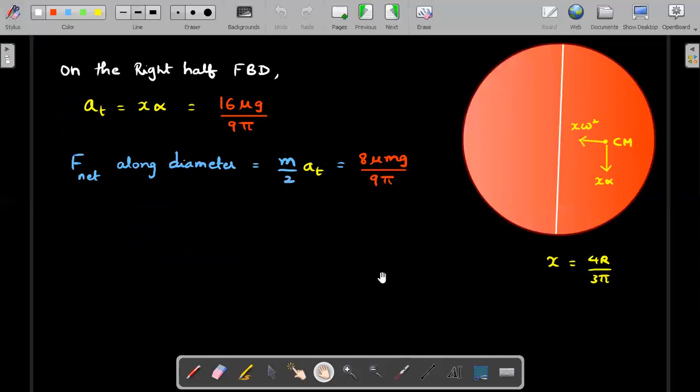Option C was about the net force acting along the diameter of a half—let's say the right half. We already saw the value of alpha is 4μg/3R. If I draw only the right half FBD, net force is always related to mass into acceleration of center of mass. The center of mass itself is going in a non-uniform circular motion of radius x, where for a disk x value is 4R/3π. The centripetal acceleration would be x omega square, and tangential acceleration will be x alpha.